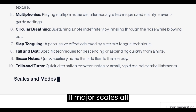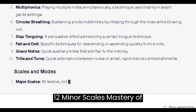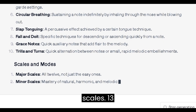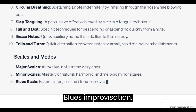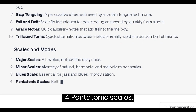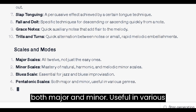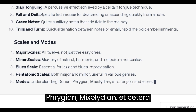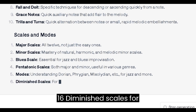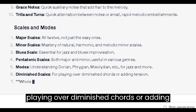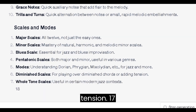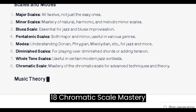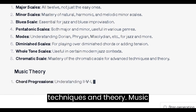11. Major Scales: all 12, not just the easy ones. 12. Minor Scales: mastery of natural, harmonic, and melodic minor scales. 13. Blues Scale: essential for jazz and blues improvisation. 14. Pentatonic Scales: both major and minor, useful in various genres. 15. Modes: understanding Dorian, Phrygian, Mixolydian, etc., for jazz and more. 16. Diminished Scales: for playing over diminished chords or adding tension. 17. Whole Tone Scales: useful in certain modern jazz contexts. 18. Chromatic Scale: mastery of the chromatic scale for advanced techniques and theory.